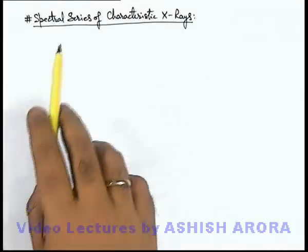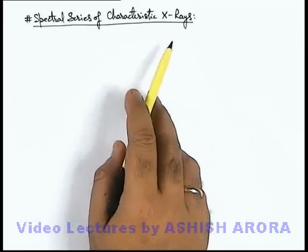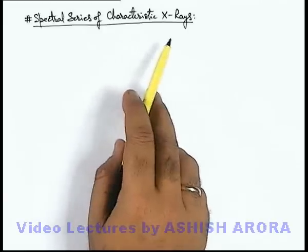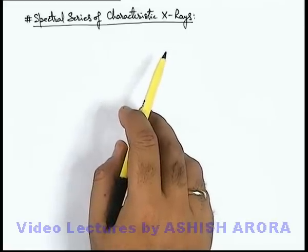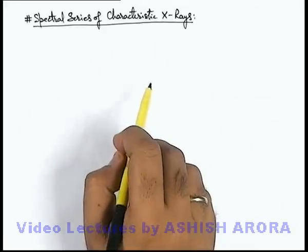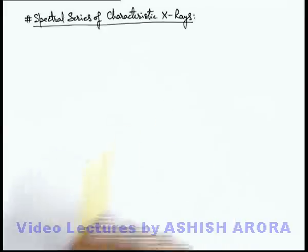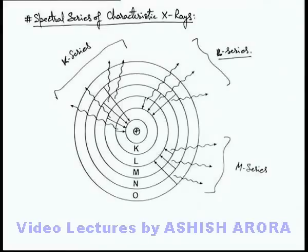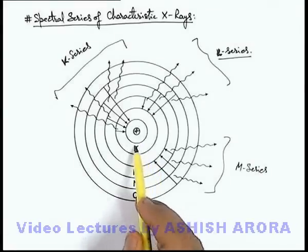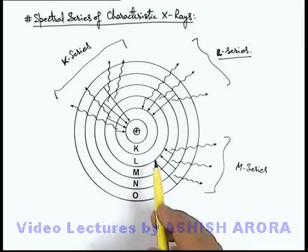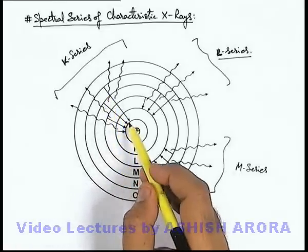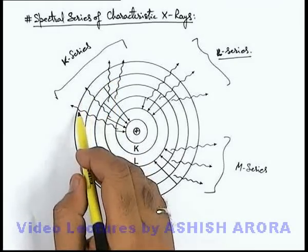Let's continue our discussion with the spectral series of characteristic x-rays. As we just discussed, characteristic x-rays are emitted when electrons in the anode atom from higher orbits make a transition to lower orbits, and the energy difference of these two corresponding orbits is emitted in the form of x-ray photons. In this diagram we can see that the various shells in the surrounding of the nucleus are named K, L, M, N, O. If an electron from any higher orbit makes a transition to the K-shell, then the emitted photons are called the K-series of x-rays.